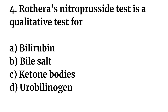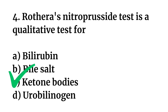Question number four: Rothera's nitroprusside test is a qualitative test for — Option A: bilirubin. Option B: bile salt. Option C: ketone bodies. Option D: urobilinogen. The right answer is Option C: ketone bodies.